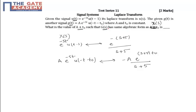Given that g(s) and x(s) have the same algebraic form, these two are the same. When you compare and equate these two, you will get t_0 equal to -1 and a equal to...